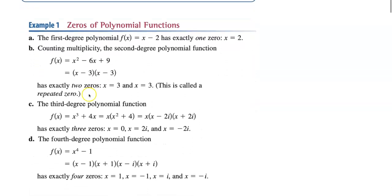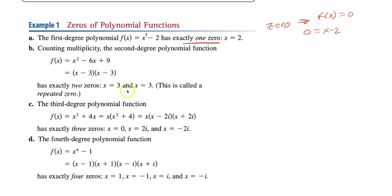So zeros of a polynomial function: if you have a linear function, that's a power of one, so you have exactly one zero. If you set it equal to zero and solve, you get one solution. If it's squared, then you should have two zeros. You could set equal to zero and factor, and you get the same zero twice — that's a multiplicity of two, also known as a repeated zero or double root.